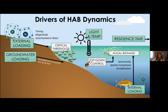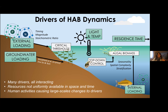Also important is how close that particular ecosystem is to various critical thresholds or its resilience. For example, in shallow lakes, mechanisms such as macrophyte dominance can allow the ecosystem to absorb shocks from external nutrient loading and mitigate how nutrient availability changes harmful algal blooms. It's for these reasons—many drivers, all interacting, and resources not uniformly available in space and time—that enacting effective management for harmful algal blooms is really difficult. Human activities in particular are causing large-scale changes to these drivers, which makes management even more difficult.